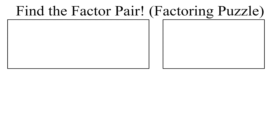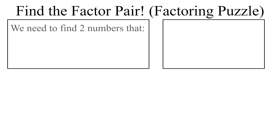The very first thing we're going to talk about is the factoring puzzle — that's what I like to call it. It's just when you are looking for a factor pair. So let's not even worry about any equations. Let's just talk about how to find a factor pair. Let's say we want to find two numbers that add to 8 and multiply to 15.